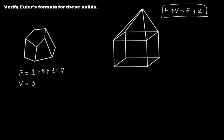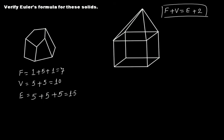Now let's calculate vertices: one, two, three, four, five vertices at the top, and the same number at the bottom, so that is 10 vertices. The number of edges: five at the top, five lateral edges from each top vertex, and five at the bottom — so you have 15 edges. Now F plus V is 7 plus 10 = 17, and E plus 2 is 15 plus 2 = 17. These are equal, so Euler's formula is verified.